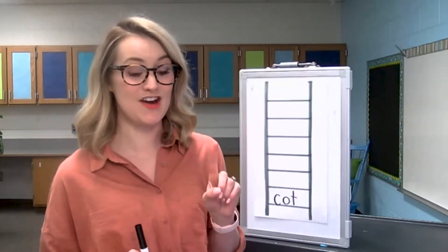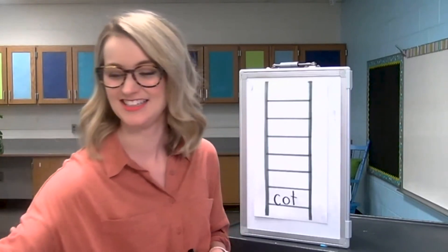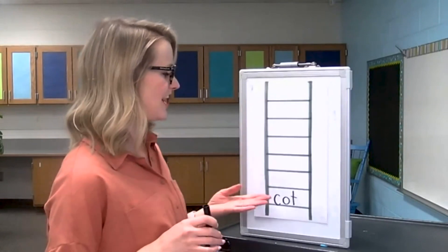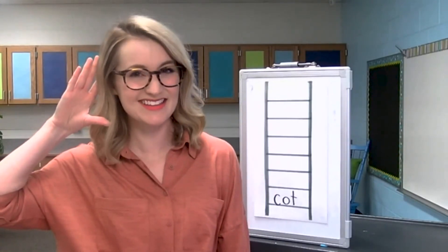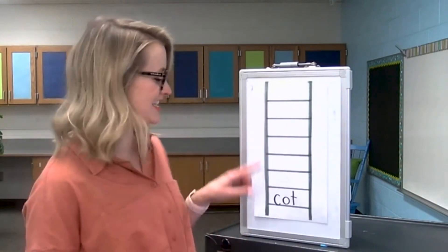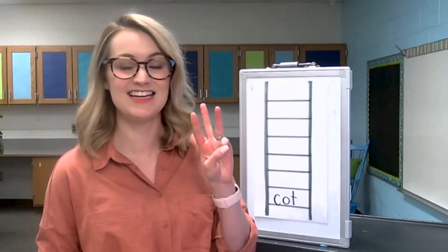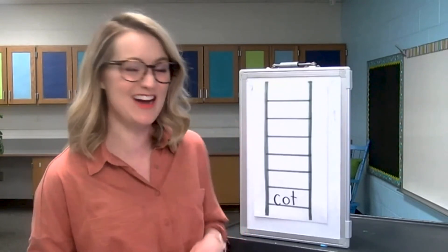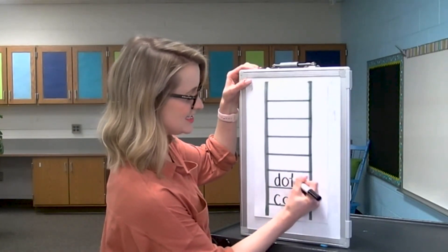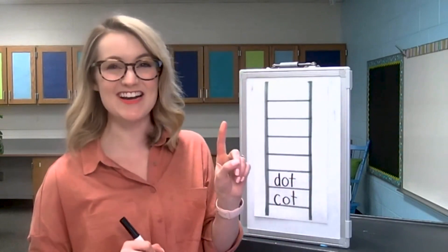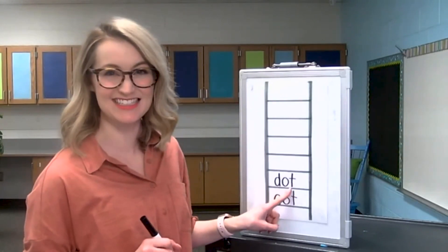Now we're going to change one letter in the word cot to make the word dot. This is a dot. What letter do you think we're going to change to turn cot into dot? Yes, the beginning sound. We're going to take out the C and put in a D. Let's listen for the sounds: D-O-T. Let's write them down: D-O-T. Take your finger and let's check it: D-O-T. Great work.